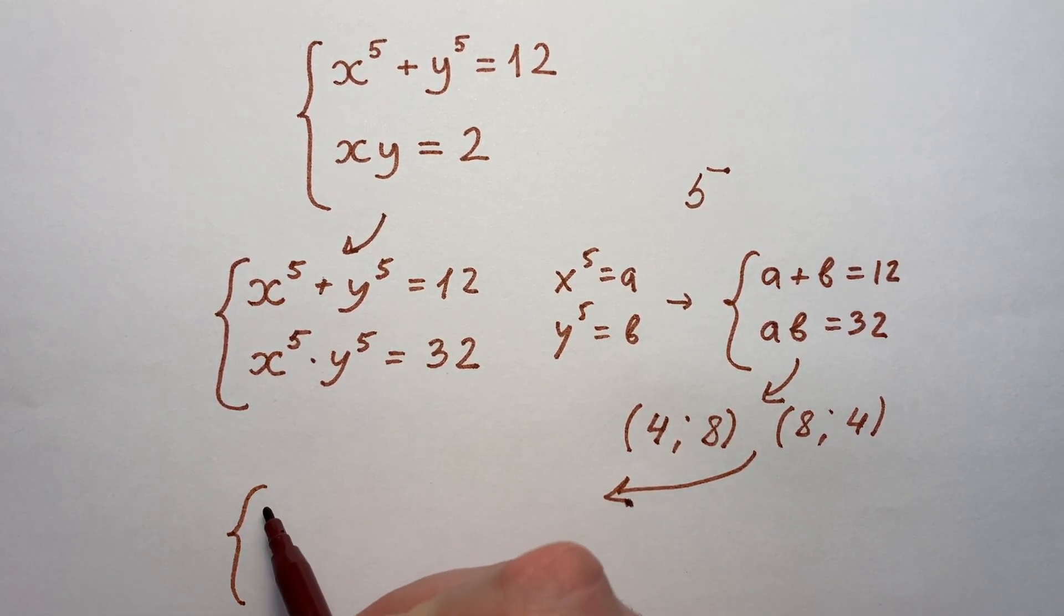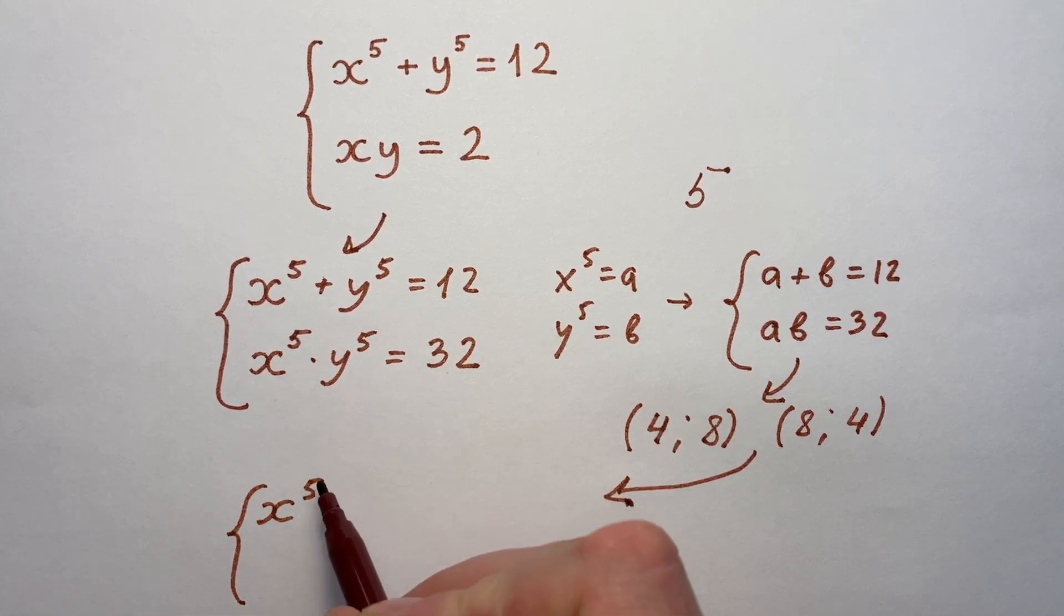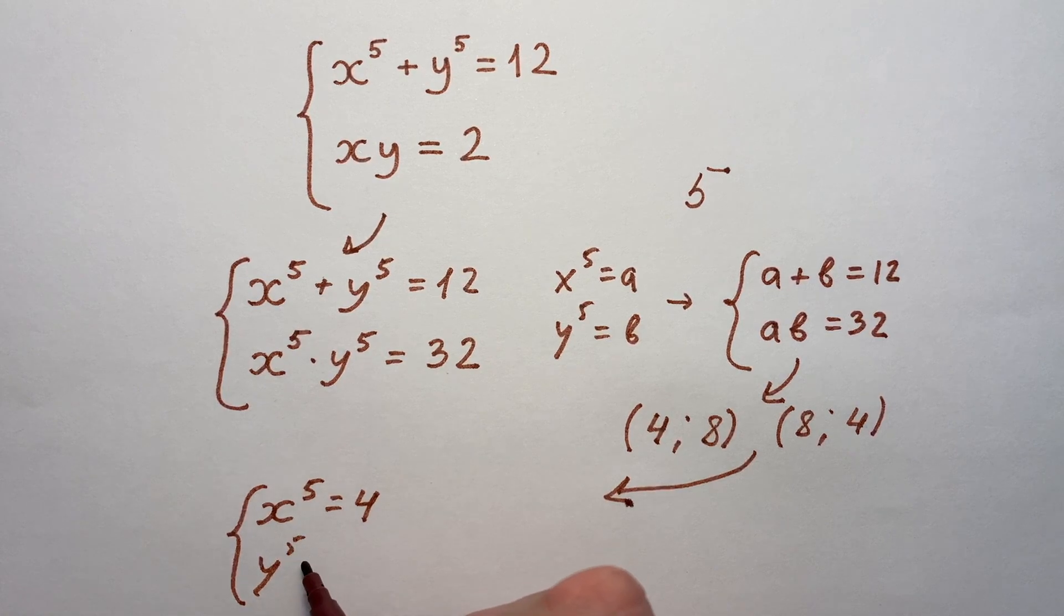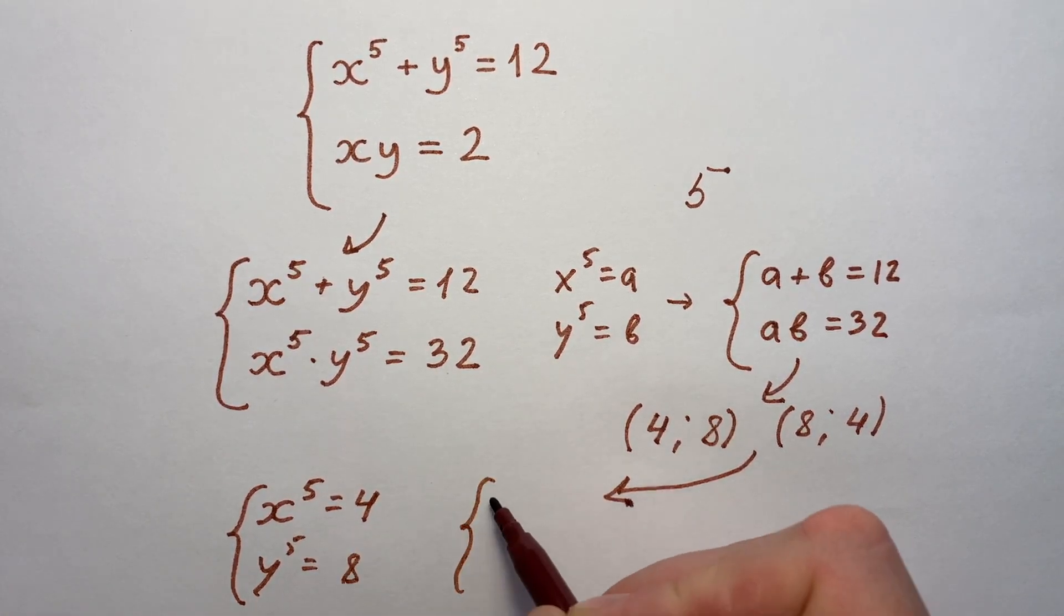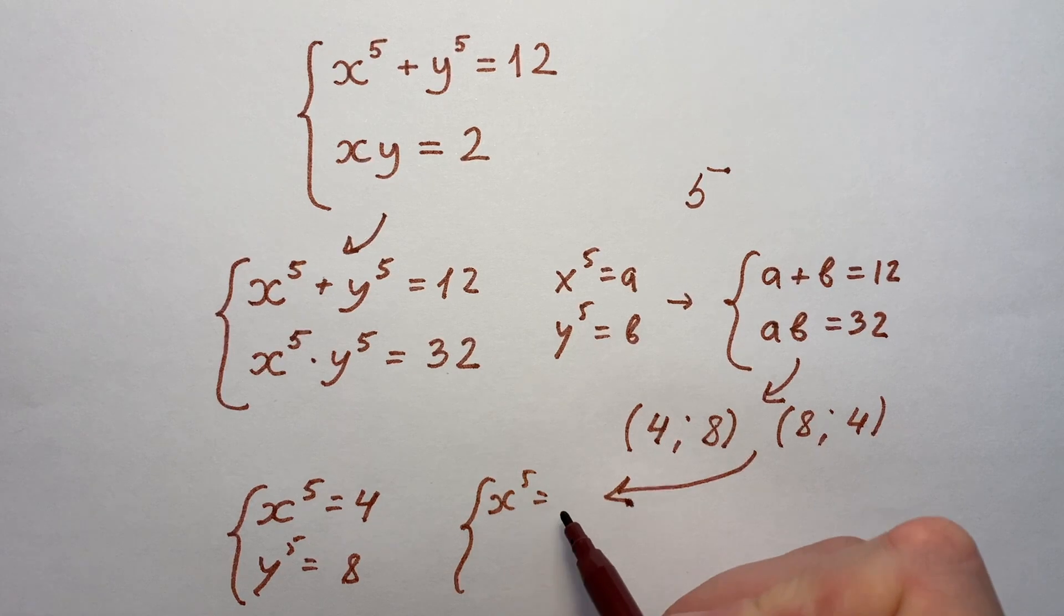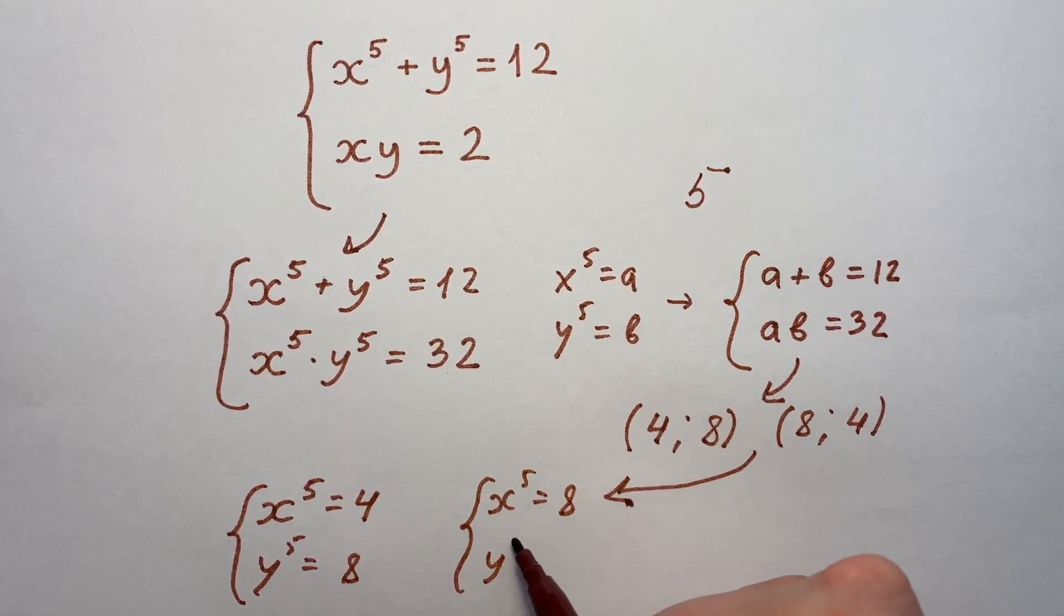The first case: x to the power of 5 equals 4, y to the power of 5 equals 8. And the second case: x to the power of 5 equals 8 and y to the power of 5 equals 4.